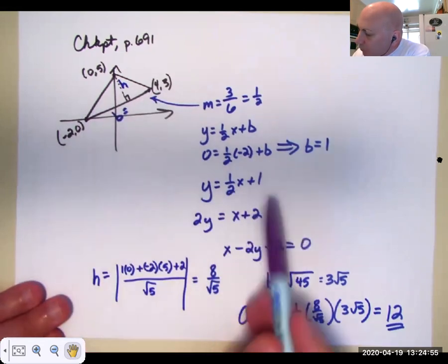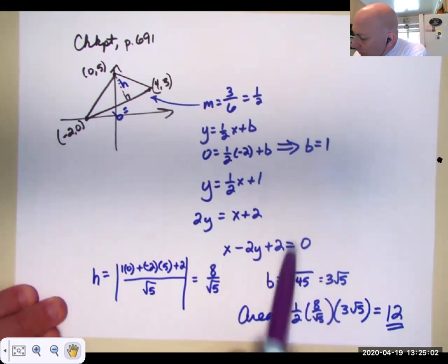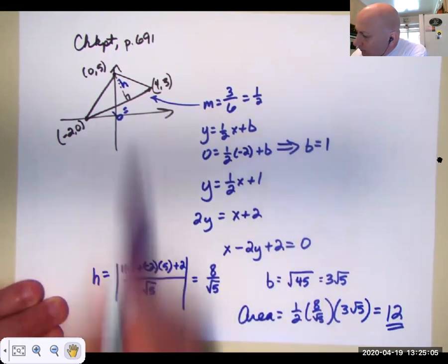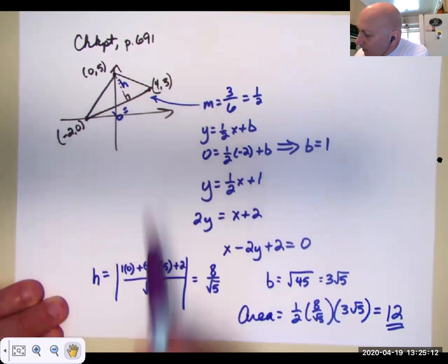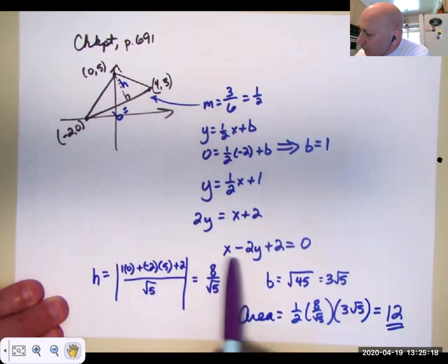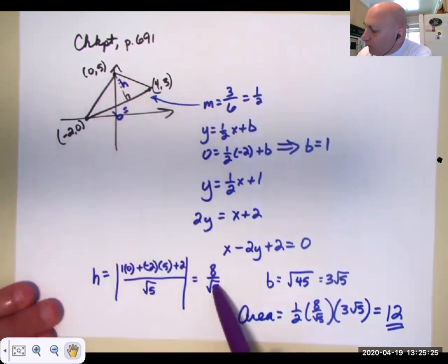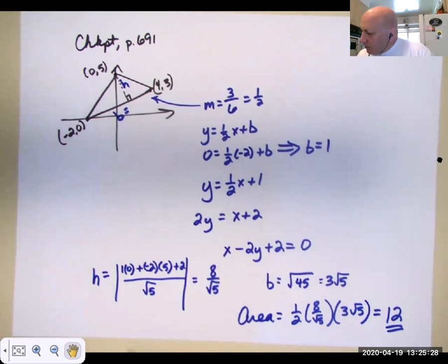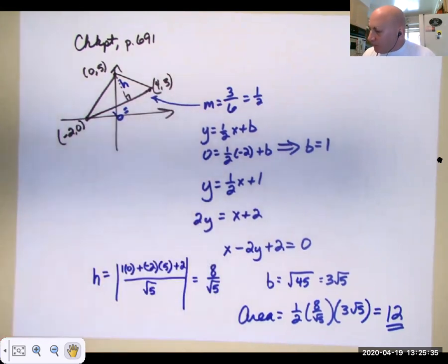We have to rewrite it in standard form, ax plus by plus c equals zero. So one times x1, and x1 here is zero, minus two times five, plus two. And then I divide by the square root of one squared plus negative two quantity squared. So my height is eight over root five. This distance here, if I use just the Pythagorean theorem, this is six, this is three, 36 plus nine is 45. So that base of this triangle is root 45 or three root five.